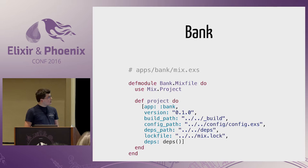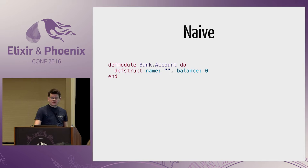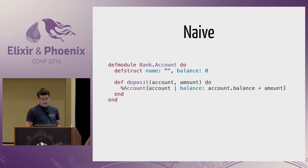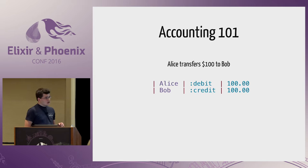Let's build the first feature: computing the account balance. A naive approach would be an account struct with a balance integer field that we increment on deposit. However, that's not actually how banks work. Any movement of money happens between at least two accounts — one is debited and the other credited. For example, Alice transfers $100 to Bob: we write a debit to Alice for $100 and a credit to Bob for $100.